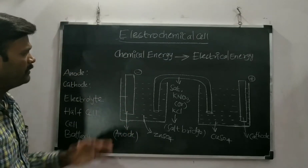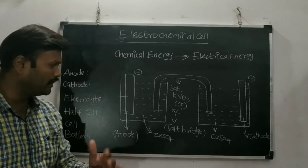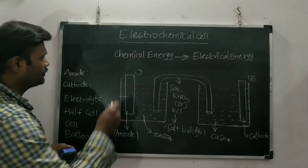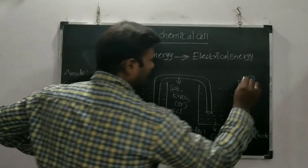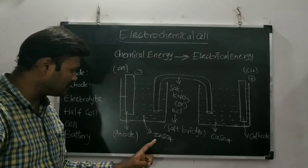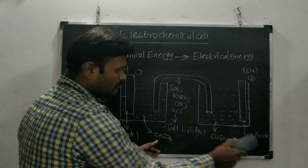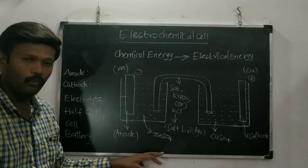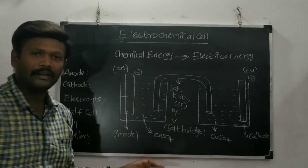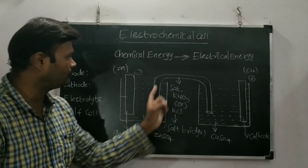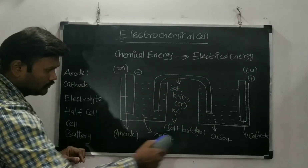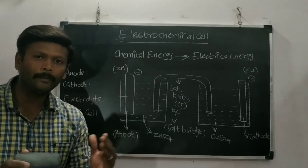In the construction of an electrochemical cell, we take an anode and a cathode. The zinc rod acts as the anode and copper acts as the cathode. The zinc rod is immersed in a solution of zinc sulfate, and the copper rod is immersed in a solution of copper sulfate. The two solutions are connected using a U-shaped tube called the salt bridge.